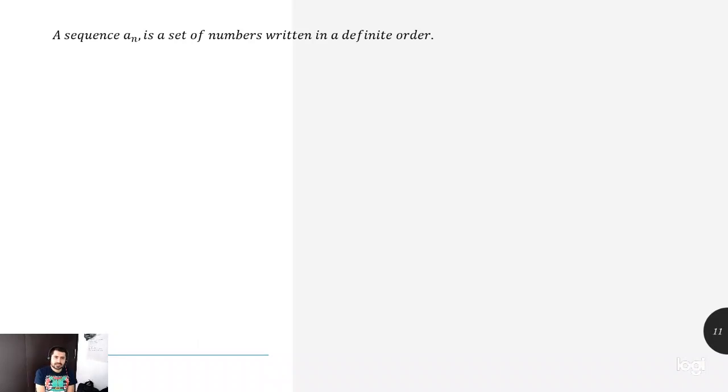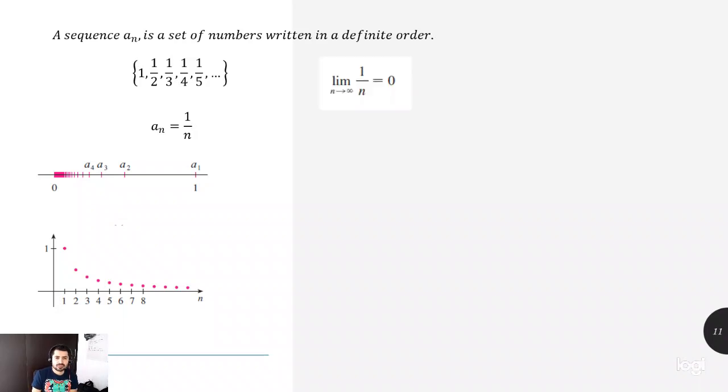Then we can consider this as a sequence. A sequence a_n is a set of numbers written in a definite order. So, for example, this could be a sequence 1, 1/2, 1/3, etc. And then we can represent as a_n equal 1/n. If we can represent that in that specific graph, we know that when we are getting more n, we're getting exactly equal to 0. Or we represent that in the Cartesian plane, we will have here that in the meantime, n is going up. At the end of the day, the result is really close to 0. So then, the limit of n when it tends to infinite 1/n is equal to 0.